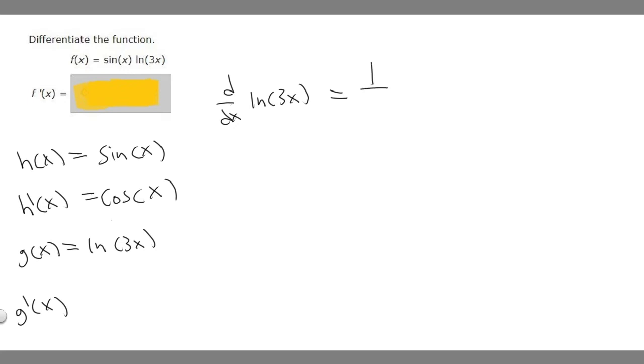So the derivative of ln(x) is 1/x. But instead of x, we're going to add our inside, so 1 over 3x, times the derivative of our inside, which is the derivative of 3x, which is just 3.